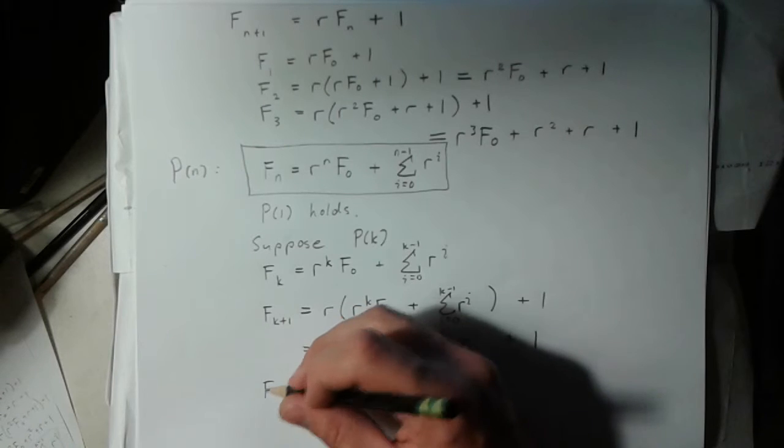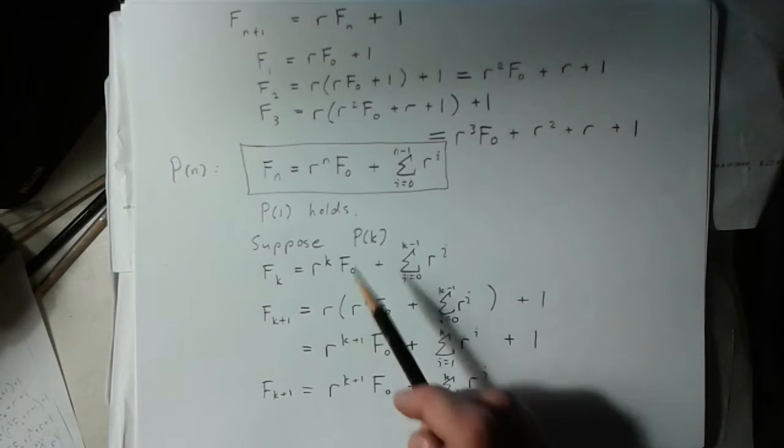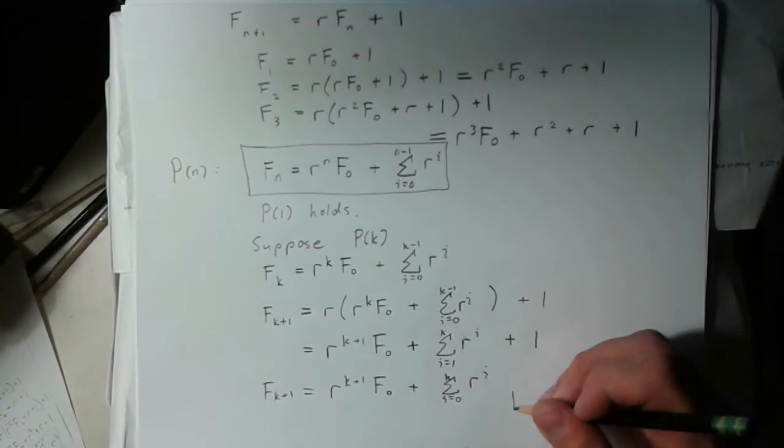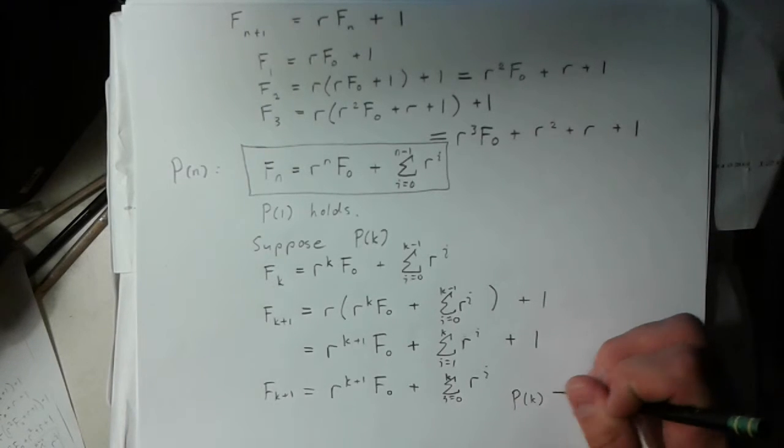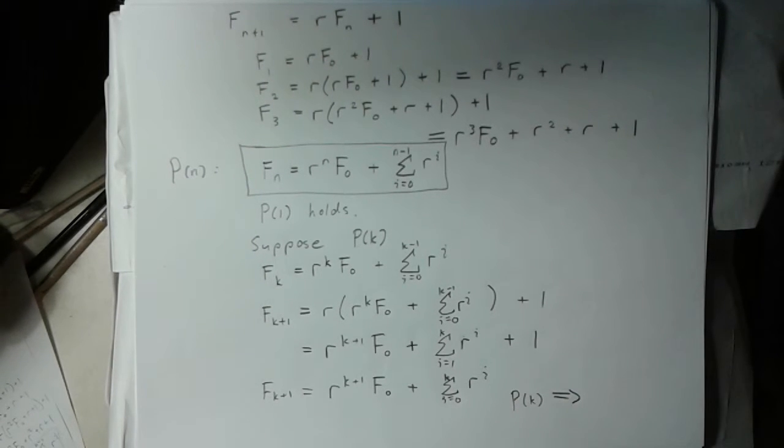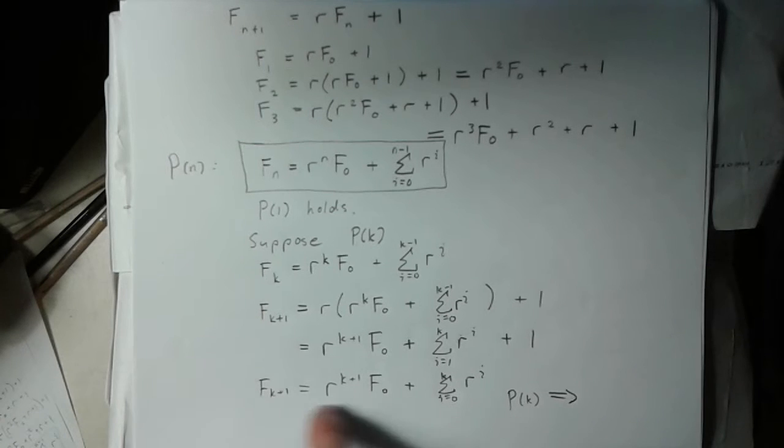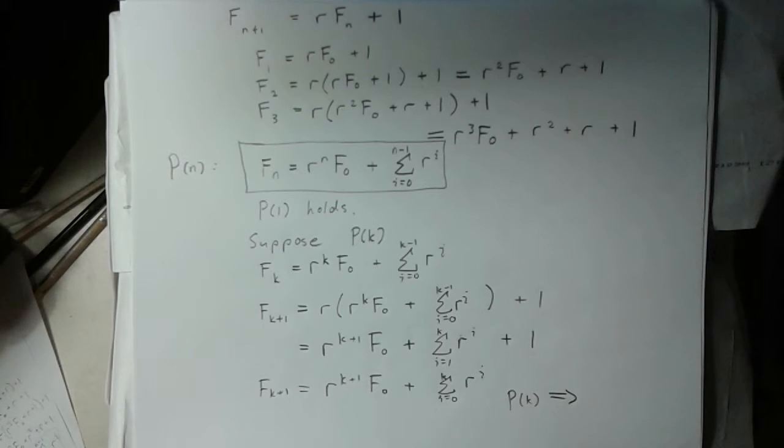And so, looking back, supposing that pk was true implied that pk plus 1 is true, because this statement right here, this equation, is just p of k plus 1.